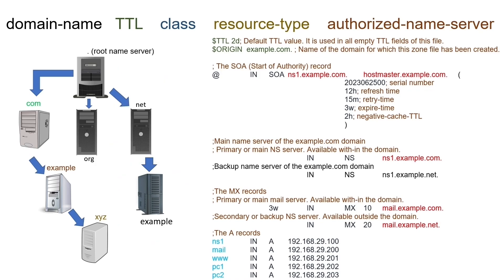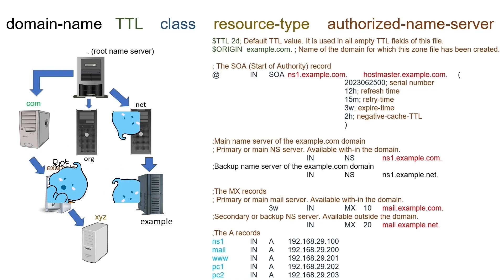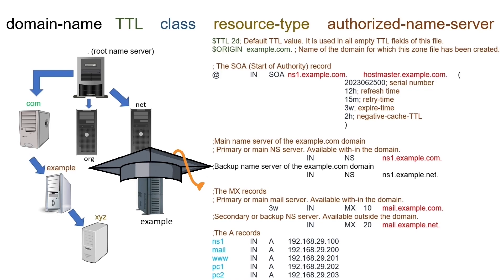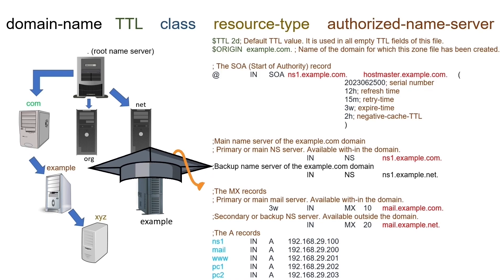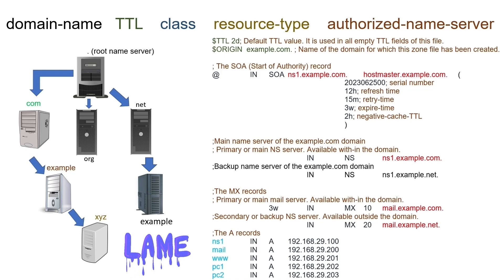In a DNS system, only authoritative name servers can resolve queries. Because of this, we also need to configure the backup name server as the authoritative name server for the domain. If we do not do this, a situation called lame delegation occurs.